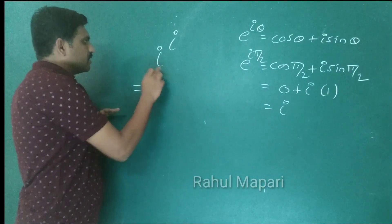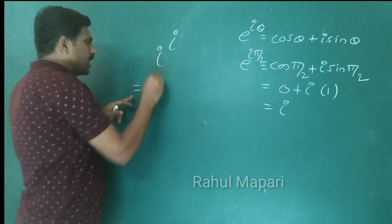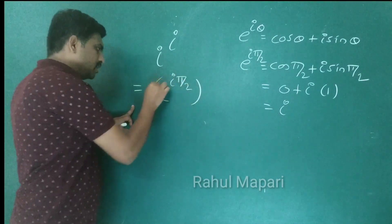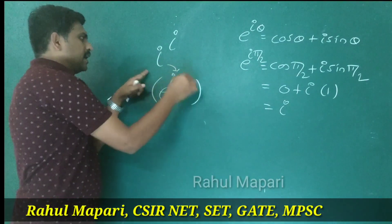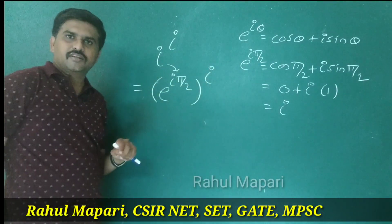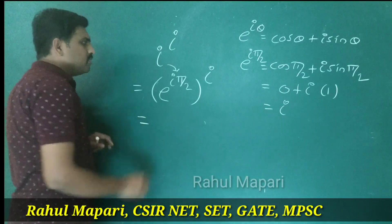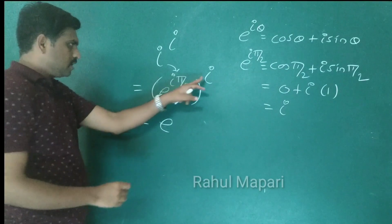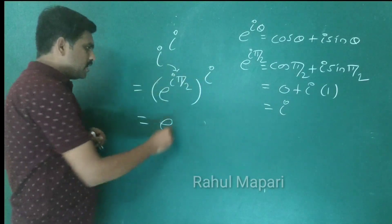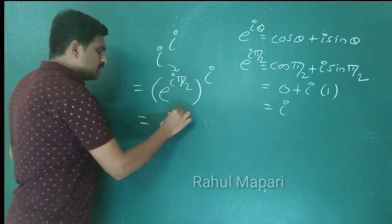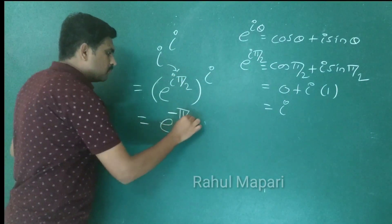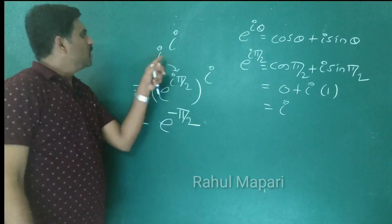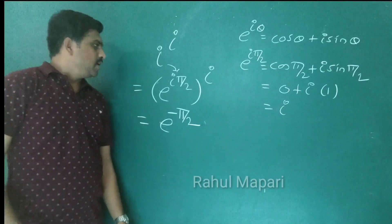So here I can write for i particularly: e power i pi by 2. The value of i raised to i is this: e power i pi by 2, all raised to i. So the exponent becomes i into i, which is i squared, which is minus 1, giving us minus pi by 2. So e power minus pi by 2 is the value of i to the power i.